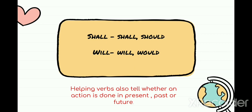Helping verbs also tell whether an action is done in the present, past, or future. We change our helping verbs according to our requirement. If talking about the past, I will use was, were, had. If talking about the present, I will use is, am, are, has, have. If talking about something which will happen — for example, 'Your exam will be conducted in September' — I use will. And shall is used specifically with I and we.